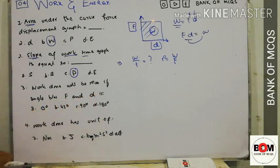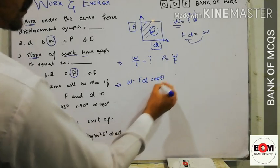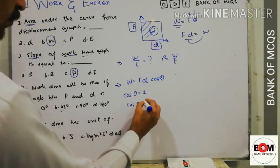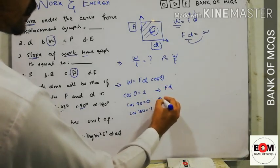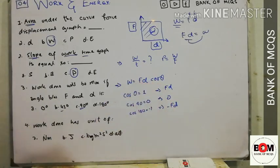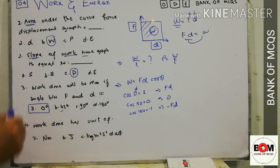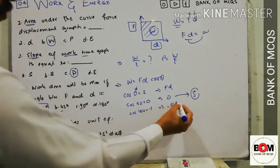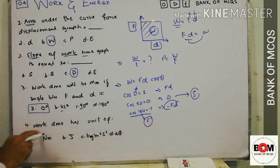MCQ on work done: the angle between F and d can be 0°, 45°, 90°, or 180°. We know W = F·d·cosθ. cos 0° = 1, cos 90° = 0, and cos 180° = −1. This gives us F·d, 0, and −F·d respectively. Work done is maximum when the angle is 0°, zero when 90°, and negative when 180°.